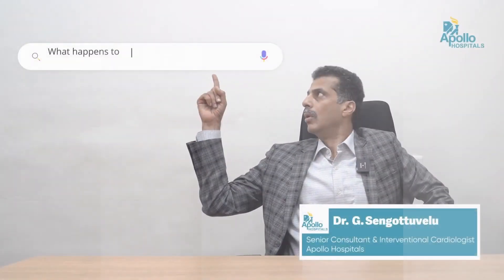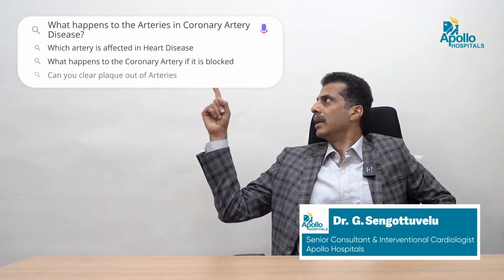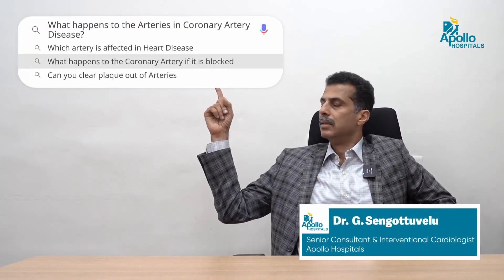Coronary arteries, as I mentioned, on the left side we have two major branches and on the right side we have one branch — the left coronary artery and the right coronary artery. What happens to arteries in coronary artery disease?